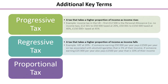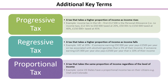A regressive tax is one that takes a higher proportion of income as income falls, and a good example would be VAT. Typically, all indirect taxes are regressive taxes. For example, if someone is earning fifty thousand pounds a year and pays two and a half thousand pounds per year in tax on alcohol and cigarettes, that is five percent of their income. However, if someone who earns just twenty-five thousand pounds per year pays the same amount, that would be ten percent of their income. So VAT and indirect taxes are a bigger burden on those with low income.